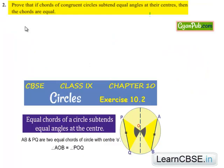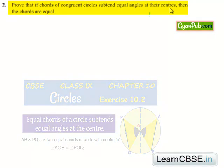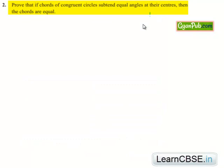Moving on to question number 2. Prove that if chords of congruent circles subtend equal angles at their centers, then the chords are of equal length.